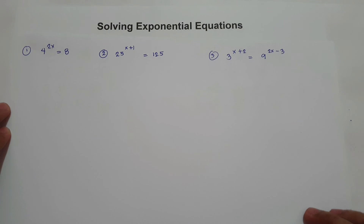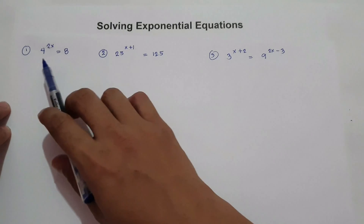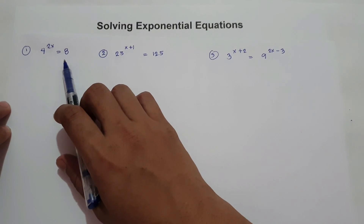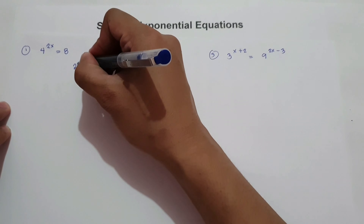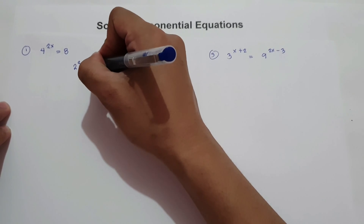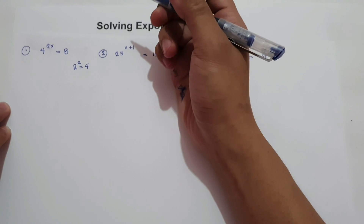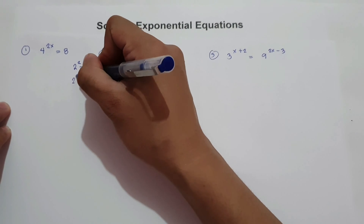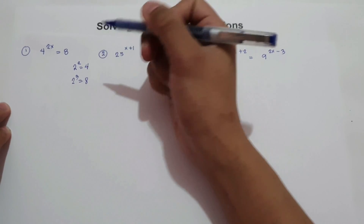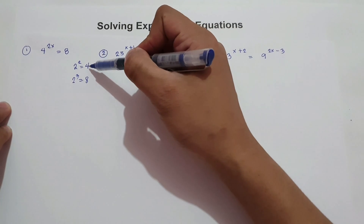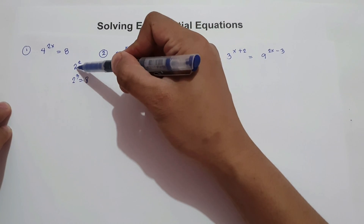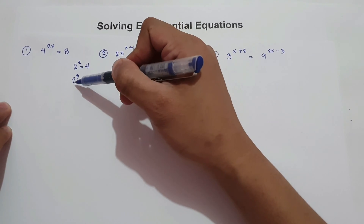To find the value of x, we must have the same base. We need to change 4 and 8 with the same base. 2 raised to 2 is 4, and 2 raised to 3 is 8. So let us change 4 into 2 raised to 2 and 8 into 2 raised to 3.